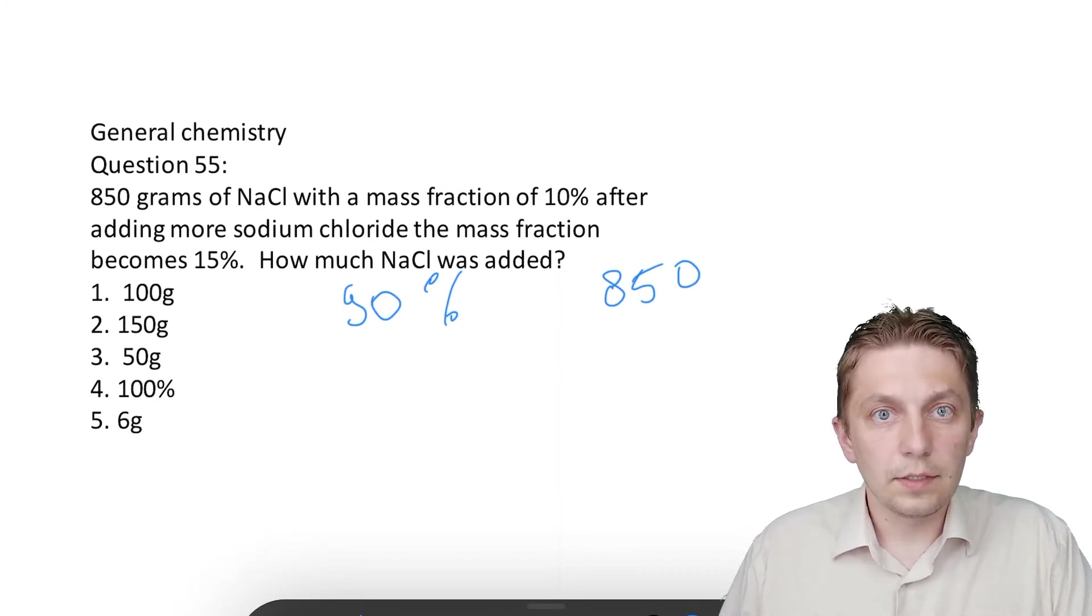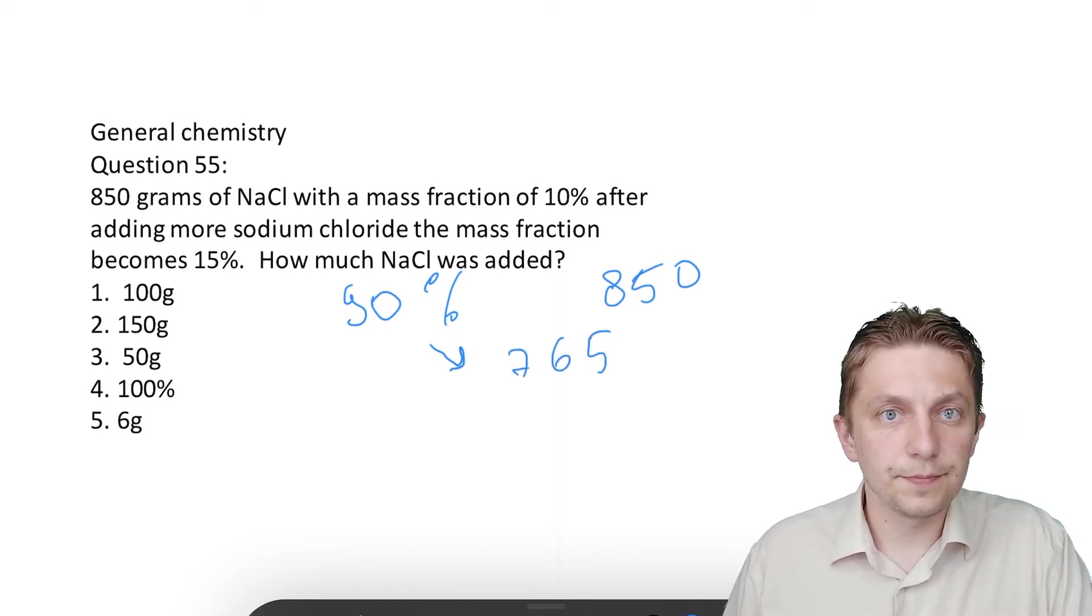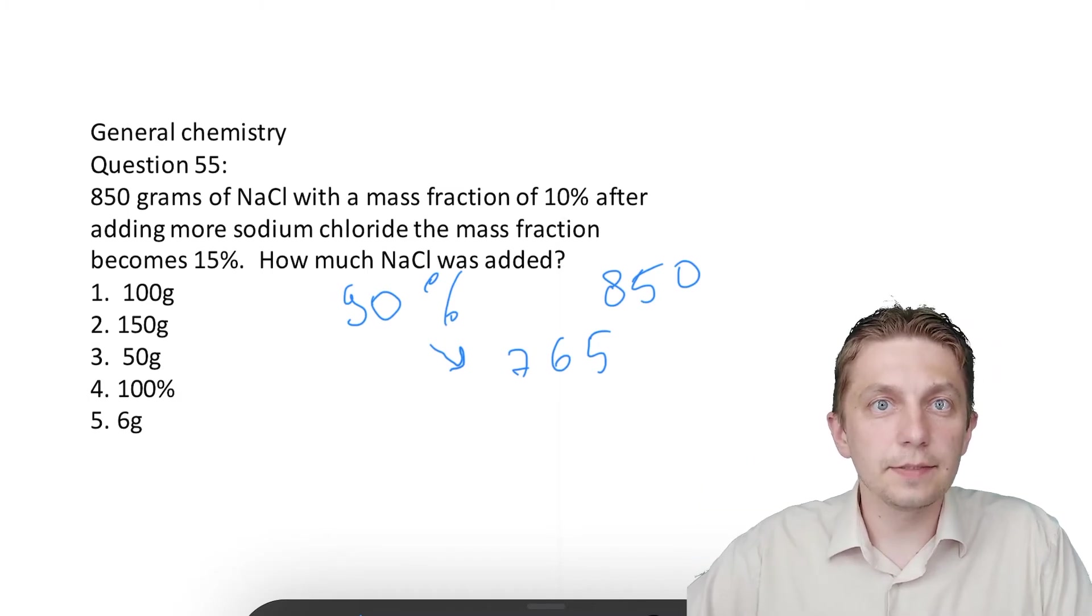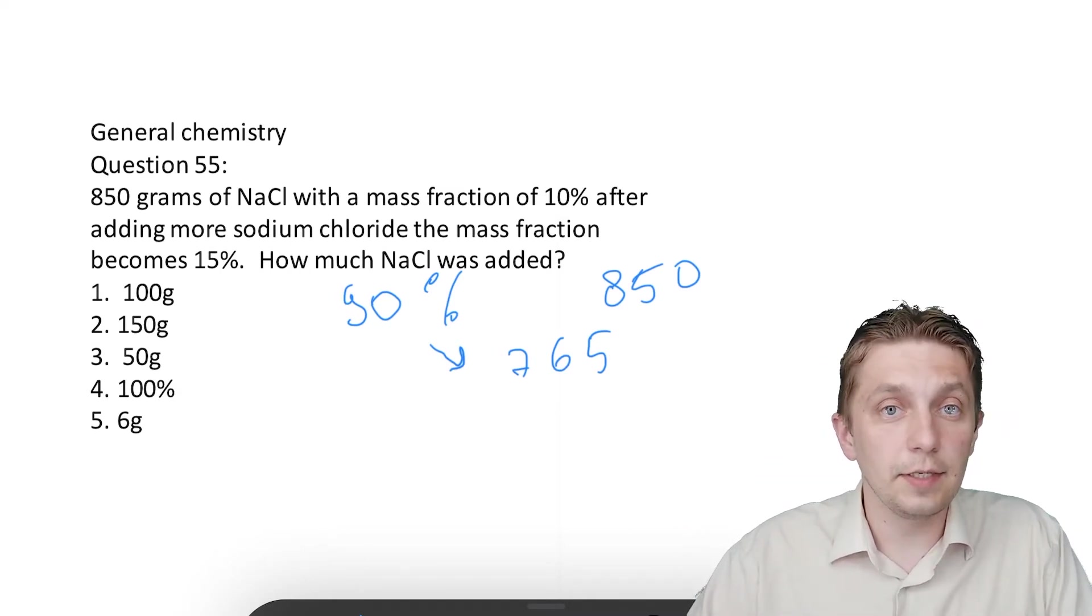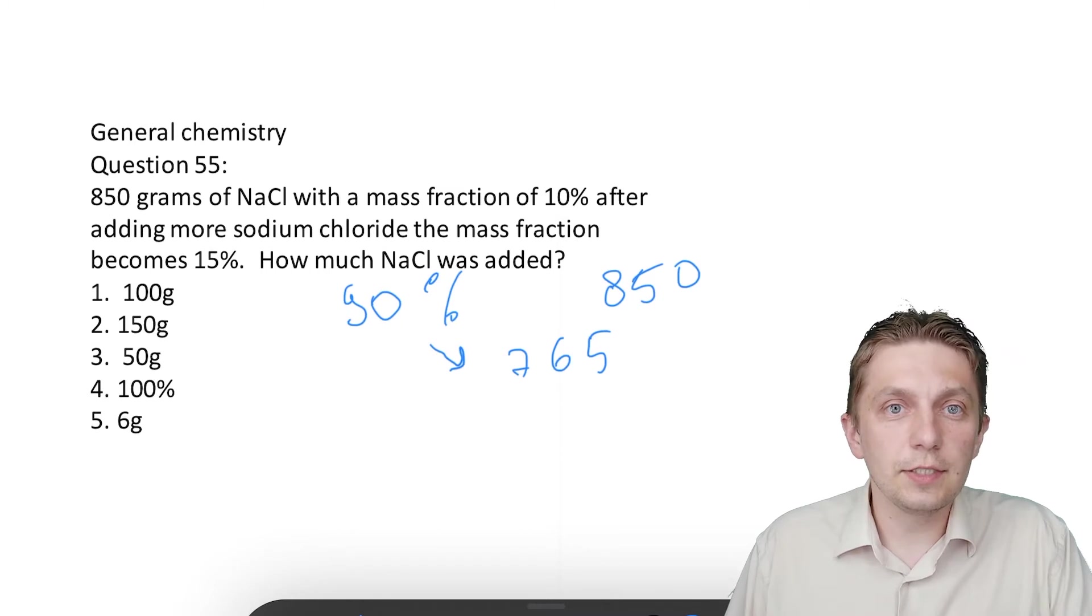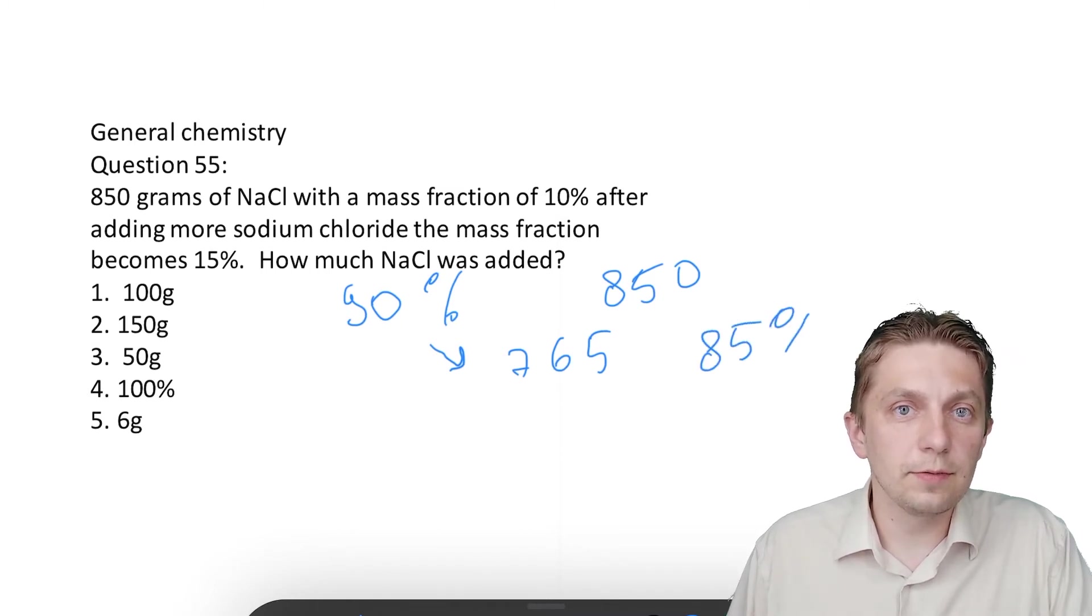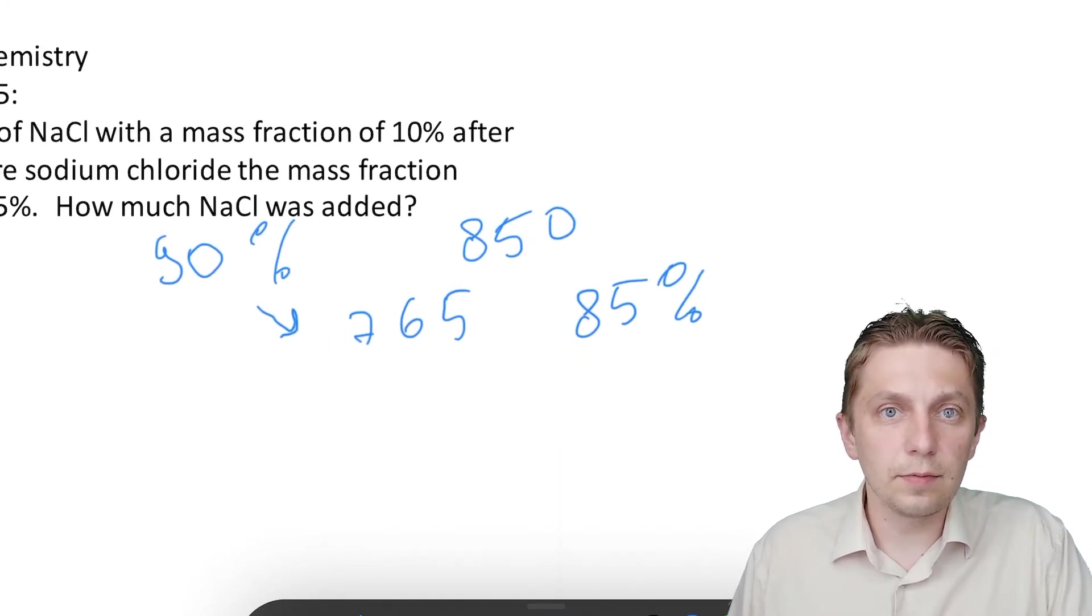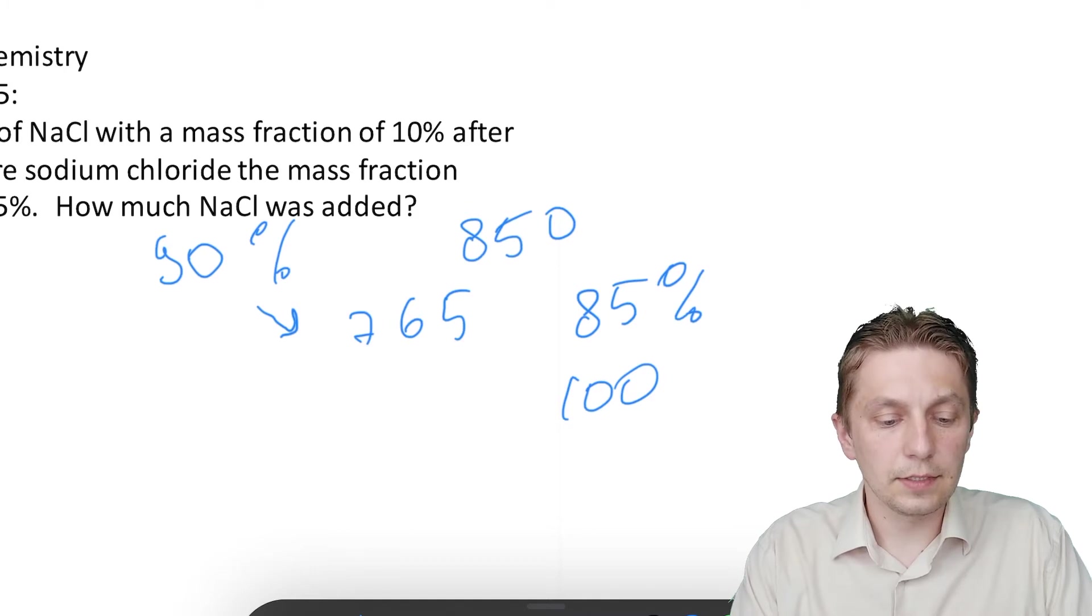It's 765. Then after adding some NaCl, mass of water remains the same. So after reaction it became 85, so if 85 is 765, then 100 percent will be 765 divided by 0.85, so it's 900 grams.